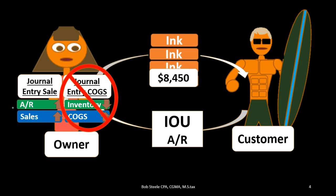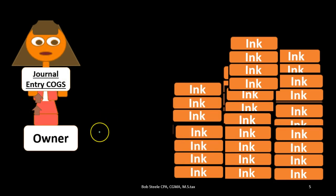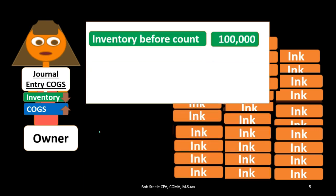Without a sophisticated system, we record just the first component — the sales and accounts receivable at the sticker price — and then record the second piece not as we go but at the end of the time period: at the end of the night, the week, or the month. At that point we do a physical count to determine how much inventory went down and how much cost of goods sold should be recorded. We record the decrease in inventory and the increase in cost of goods sold at the end of the period — not for one transaction, but in one lump sum for all sales transactions during that time.